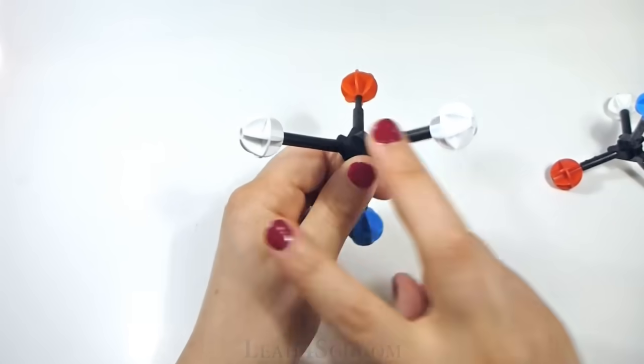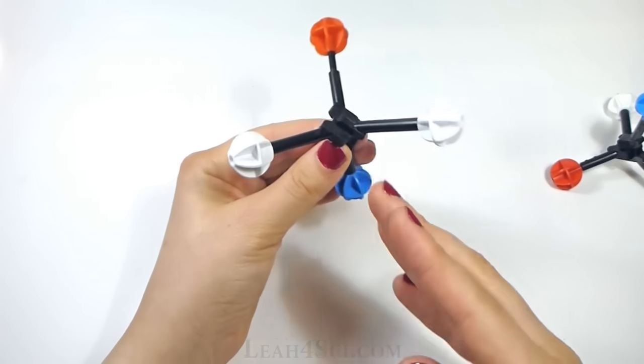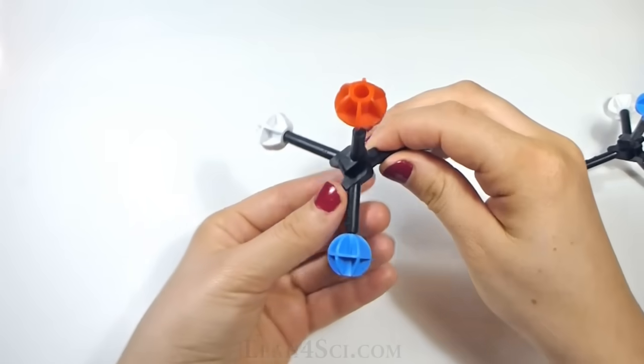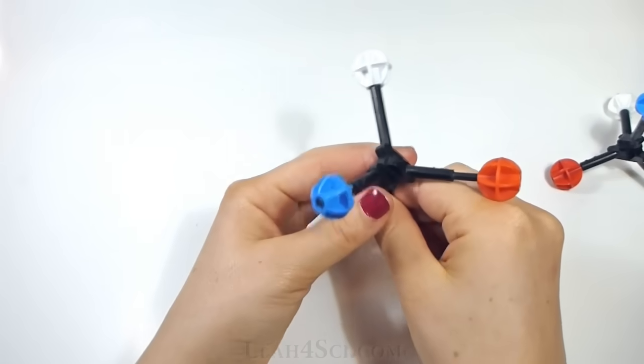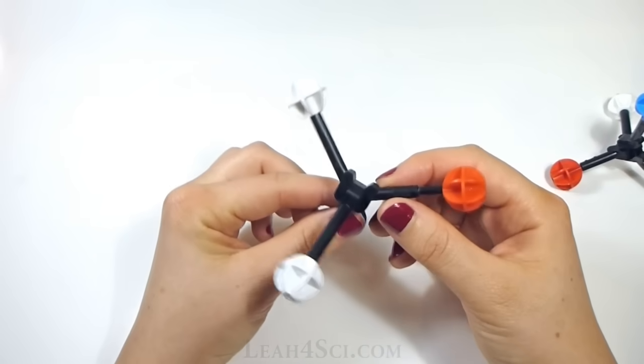And the answer is two of the same substituents makes this molecule symmetrical. Notice there's a line of symmetry going right down the center. Again a line of symmetry, no matter how I turn it, I can find that symmetry and that makes this molecule achiral.